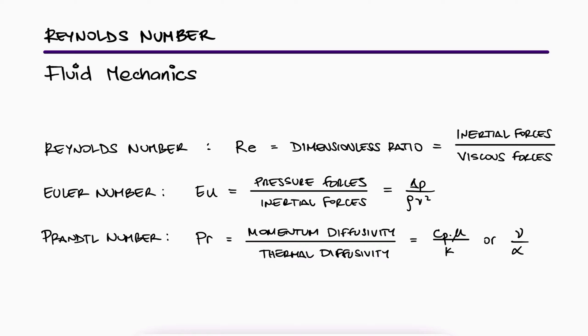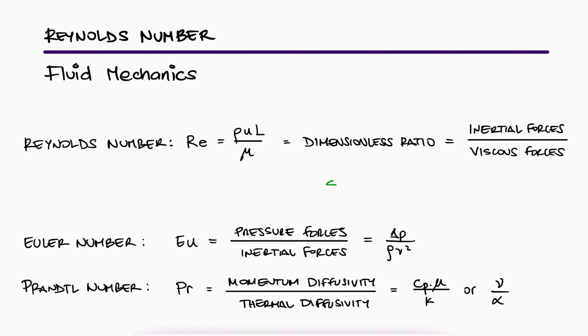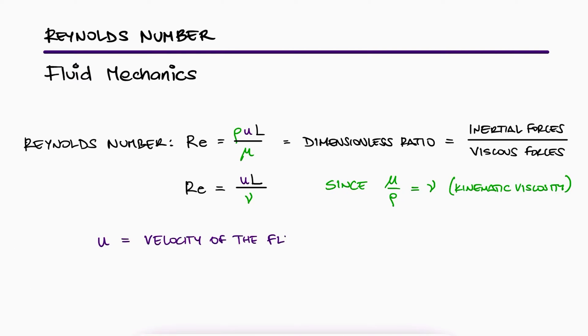The ratio in Reynolds number can be written as ρUL over μ, or since μ over ρ is the kinematic viscosity ν, it can also be written as UL over ν. U refers to the velocity of the fluid, and L is a characteristic linear dimension or characteristic length. The numerator relates to the inertial forces, and the denominator relates to the viscous forces.